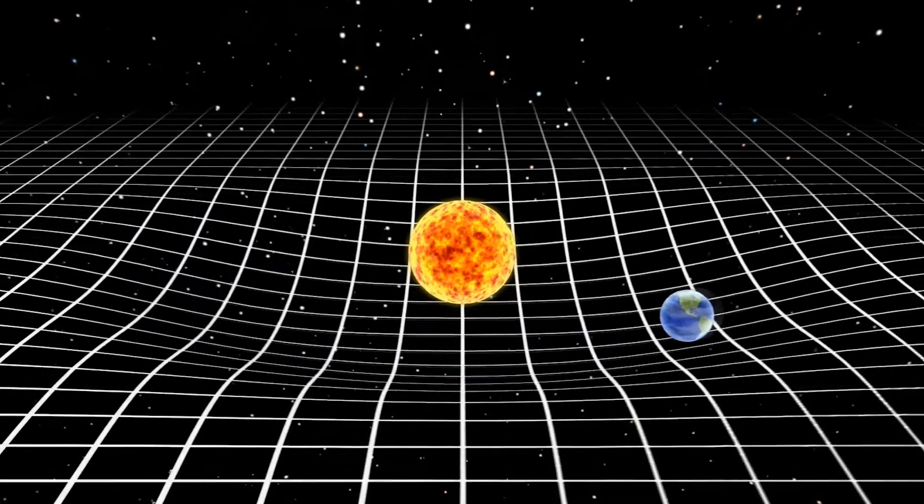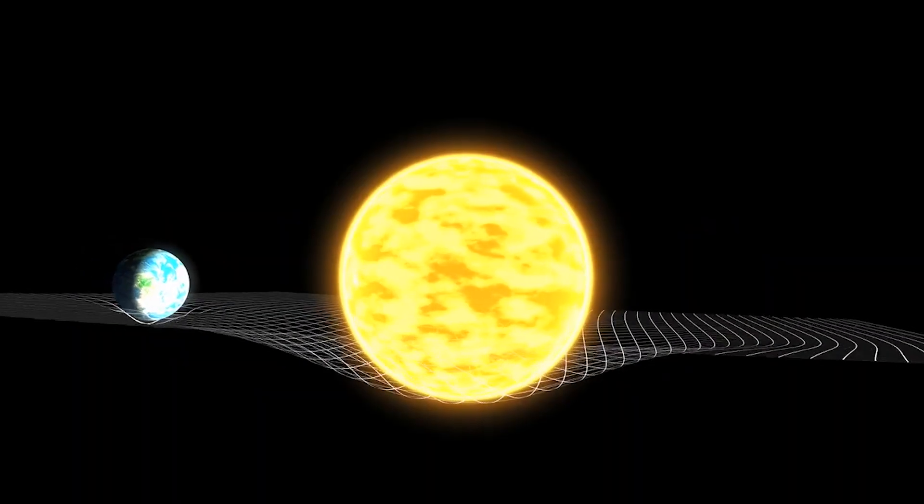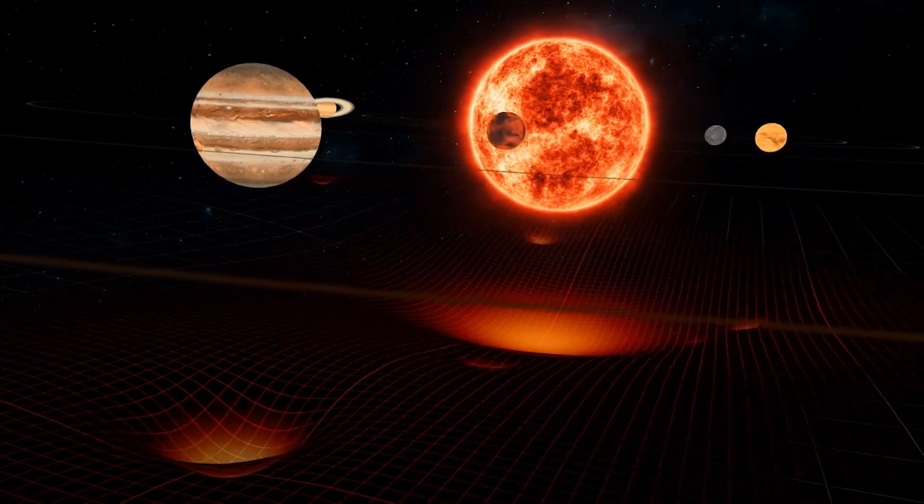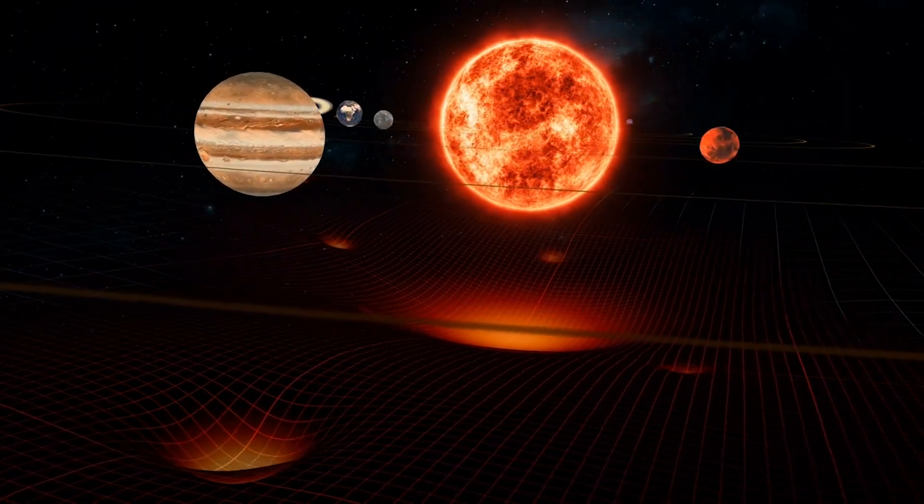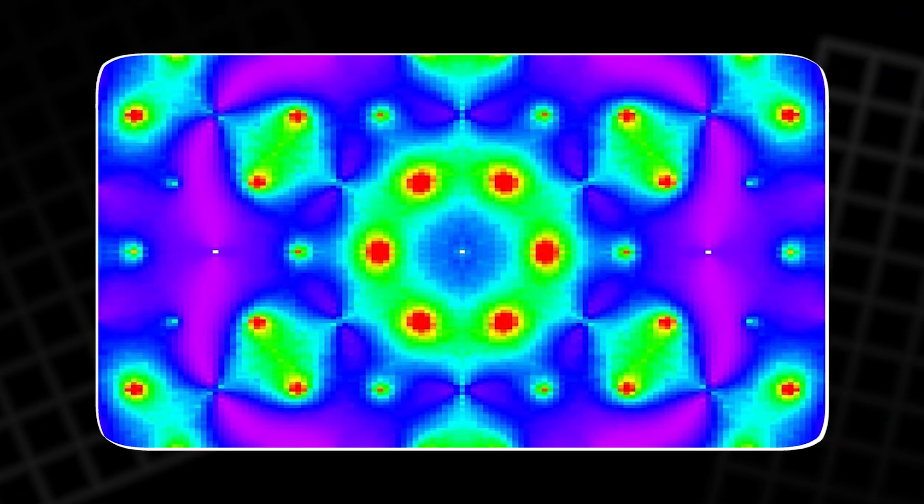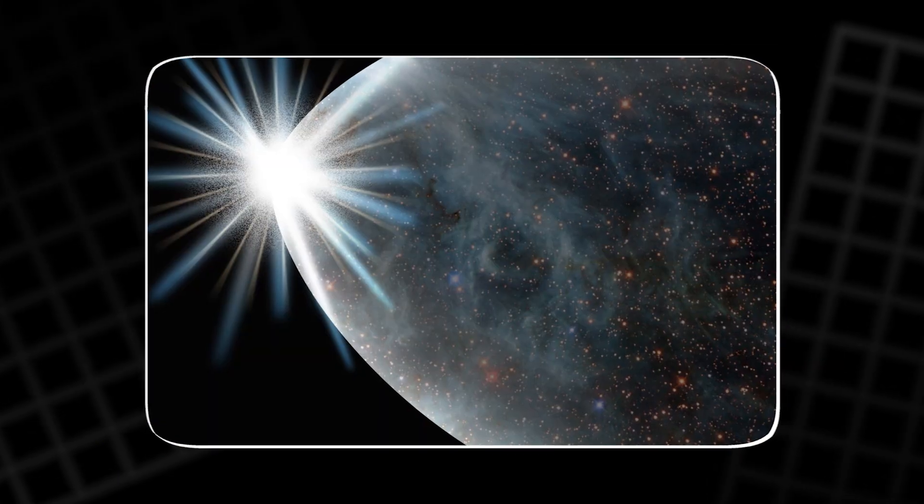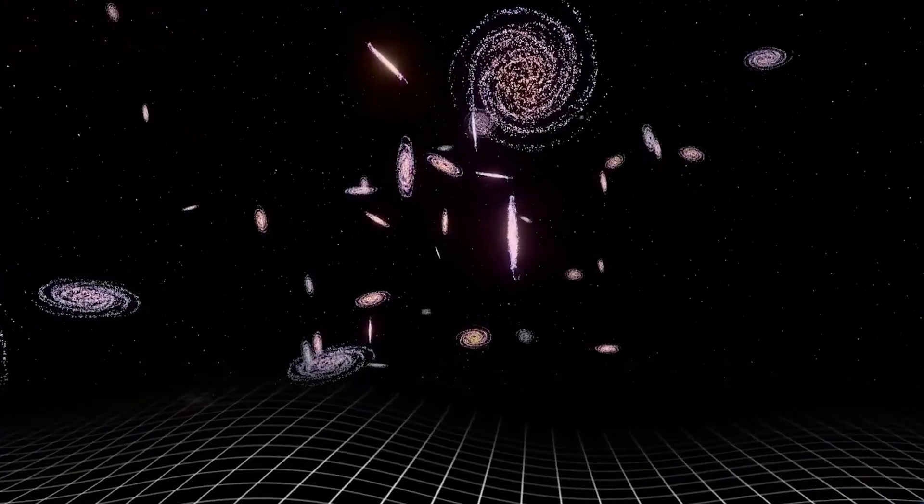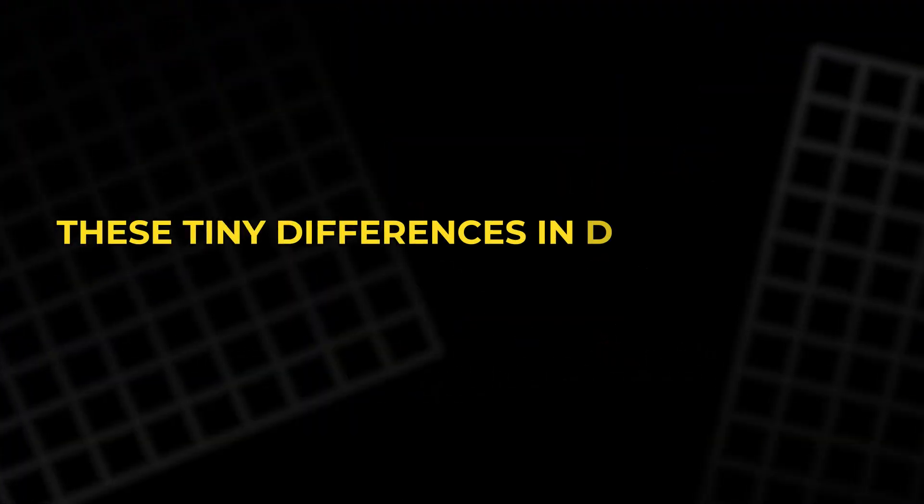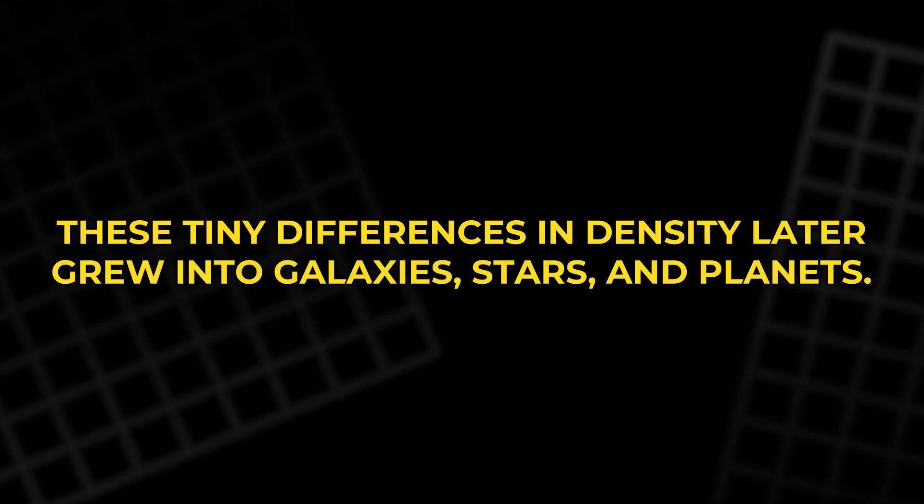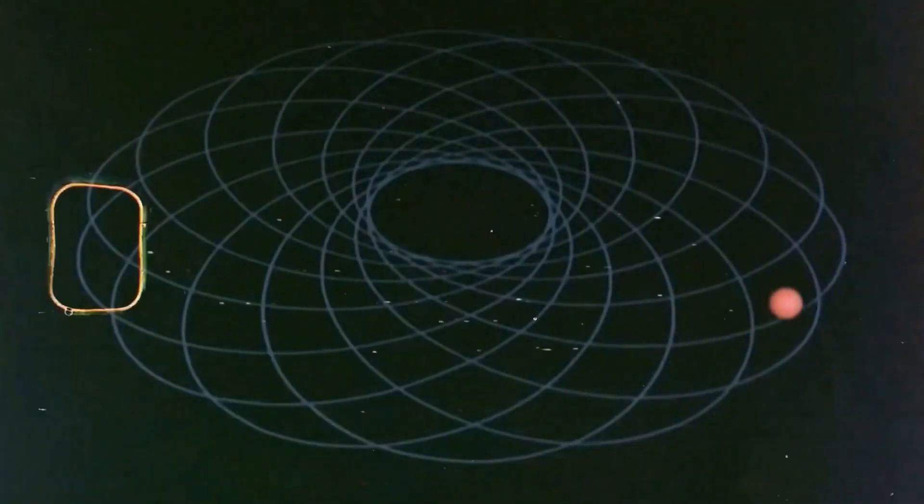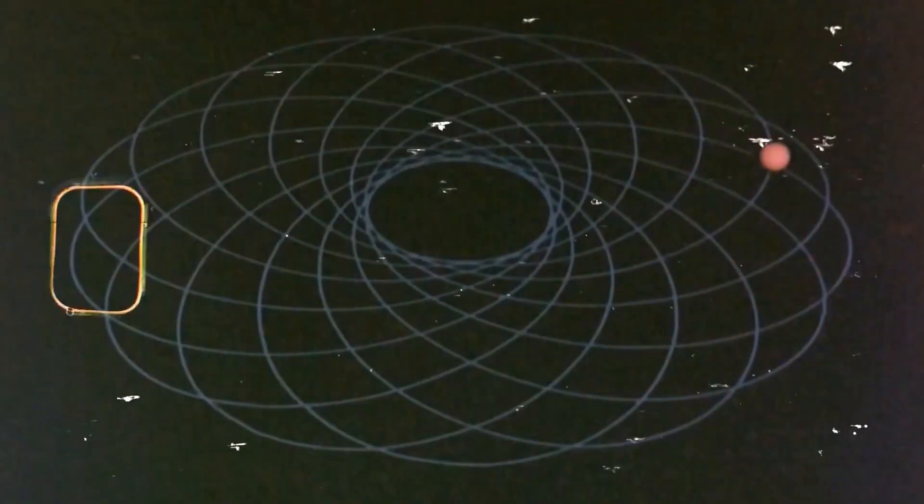What actually banged? Inflation flattened any curves in space, explaining why the universe is so flat today. It stretched regions that were once in contact, solving the horizon problem. And it prevented magnetic monopoles from forming. But inflation did even more. Tiny quantum fluctuations in the inflation field became fixed in space as it expanded. These tiny differences in density later grew into galaxies, stars, and planets. Without these fluctuations, nothing we see today would exist.